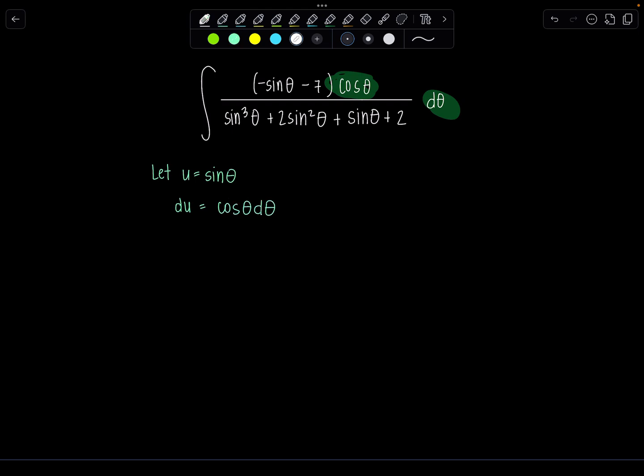So now let's rewrite this integral all in terms of u. So upstairs we'll have negative u minus 7. Let me put it on the side it'll look better. Over u cubed plus 2u squared plus u plus 2 and then the du I'll put right here.